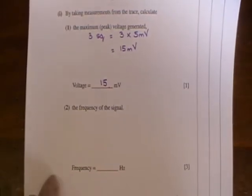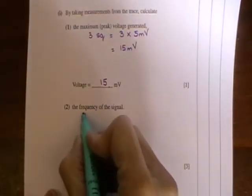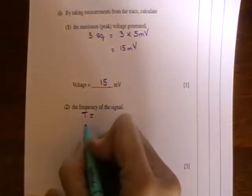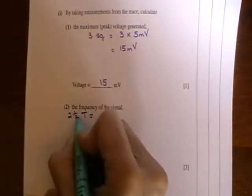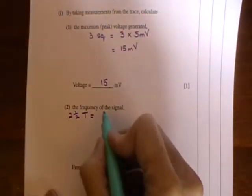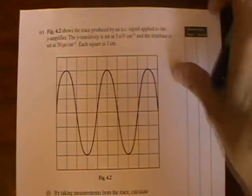The next part we have to find is the frequency of the signal. So we need to work out the time period of the wave. So we can tell right across that screen we've got 1, 2 and a half. So we know that 2 and a half time periods is equal to 2, 4, 6, 8, 10 squares. And each square is worth 50 microseconds.